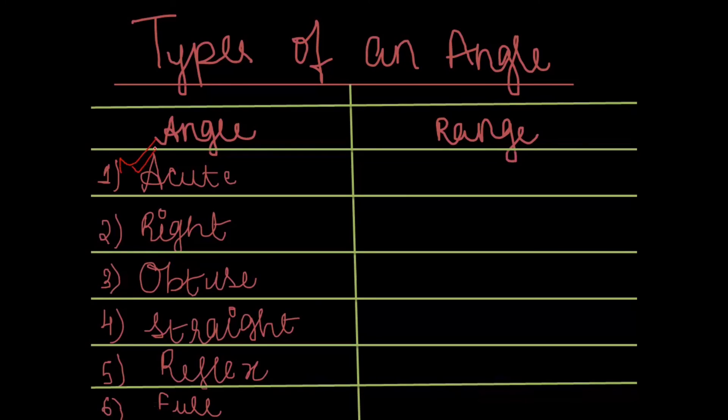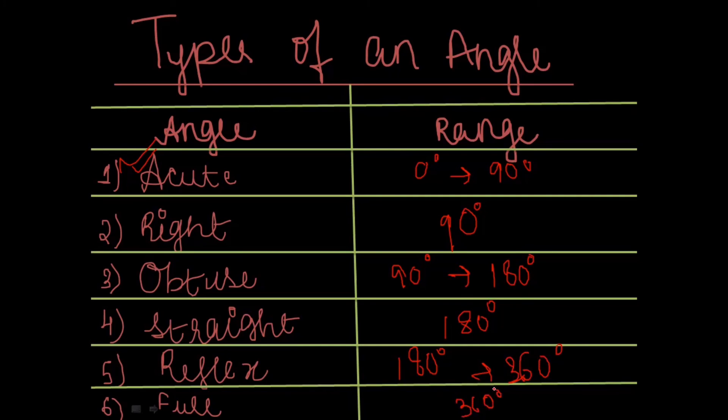Now let's revise each concept again. Acute angle is between 0 to 90 degrees. Right angle is exactly 90 degrees. Obtuse angle is 90 to 180 degrees. Straight angle is exactly 180 degrees. Reflex angle is between 180 to 360 degrees. Full angle is exactly 360 degrees.